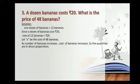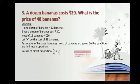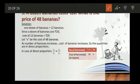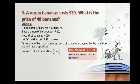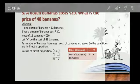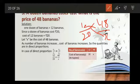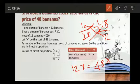In case of direct proportion we have X1 by Y1 is equal to X2 by Y2. Make a table where X is number of bananas and Y is the cost. For 12 bananas it is 20 rupees, and for 48 bananas we take it as X. Substituting: 12 by 20 is equal to 48 by X. Do cross multiplication: 12X is equal to 48 into 20.